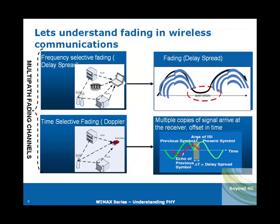Let's understand fading in wireless communication. Multipath fading channels are of two types shown on the left side of the presentation. The first is called frequency selective fading, also commonly known as delay spread. In this type of fading, the mobile station receives wireless signals from multiple paths, and due to these multiple paths this kind of fading is seen in wireless channels.